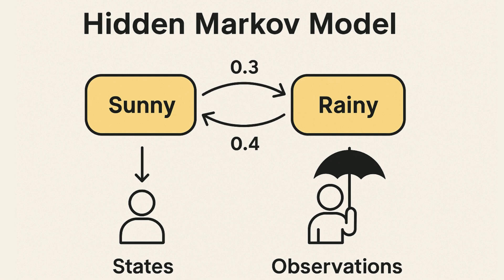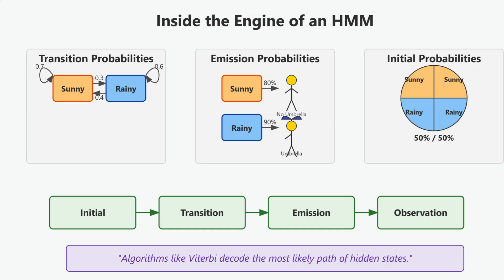These probabilities let us model real-world processes where the true situation is hidden, but we can still guess what's going on by watching for clues. So now that we understand the intuition, let's see how hidden Markov models actually work in practice. There are three key components in an HMM.